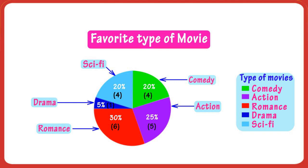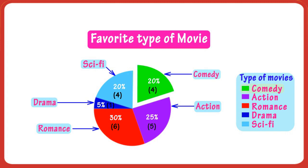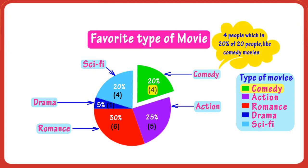As the labels on the graph tell us, the green portion represents the fraction of people out of 20 people that like comedy movies. The label also says 4 people, which is 20% of 20 people, like comedy movies.